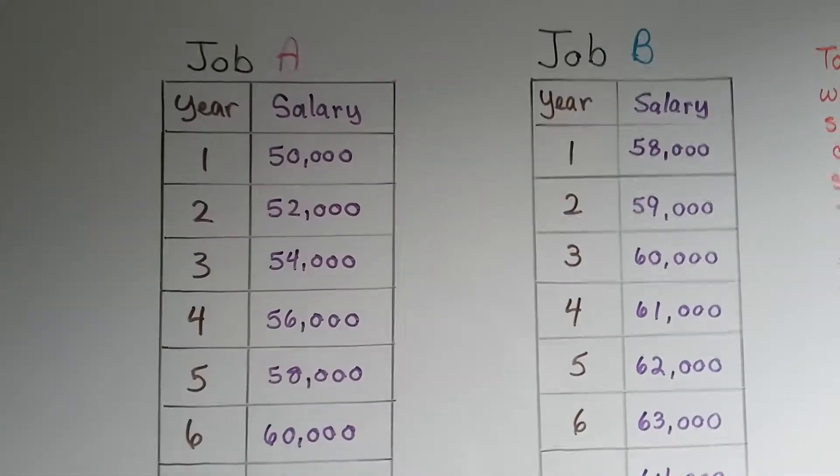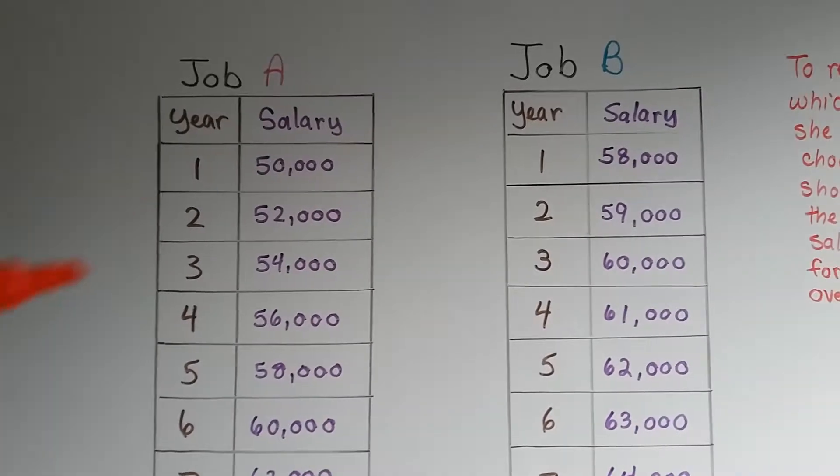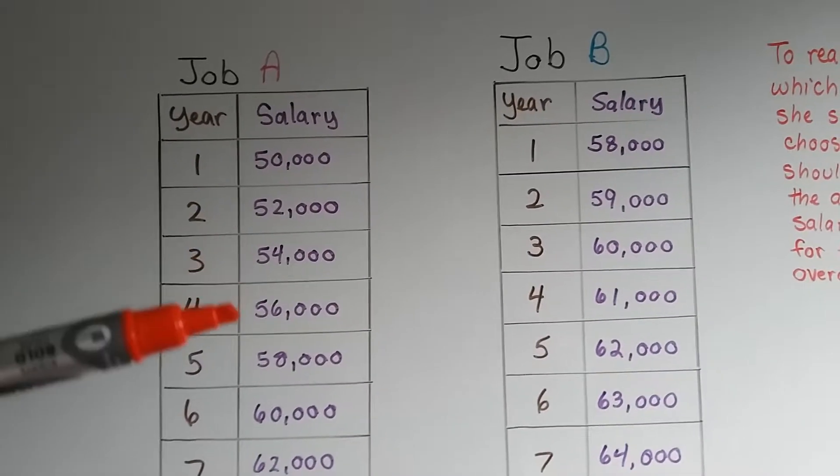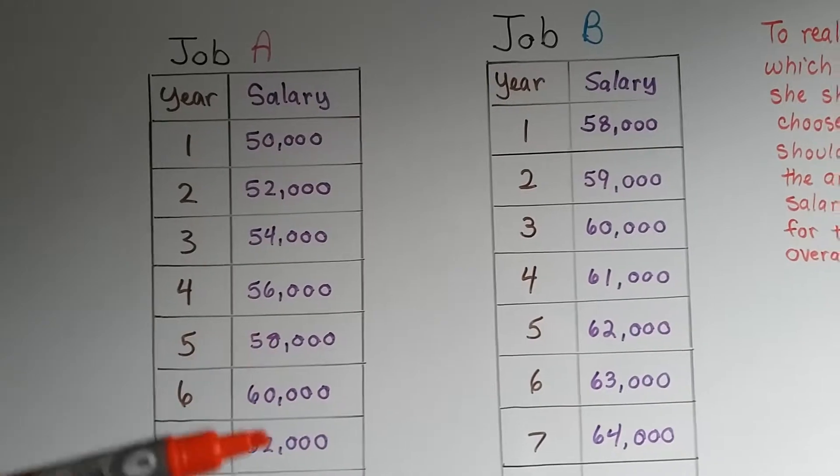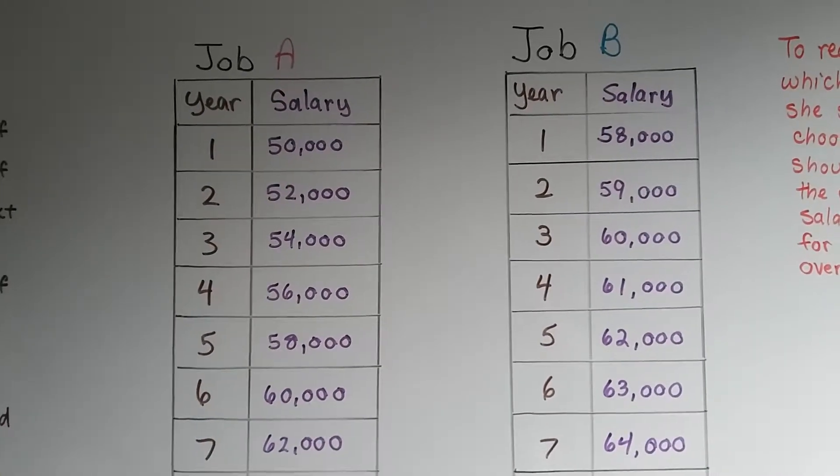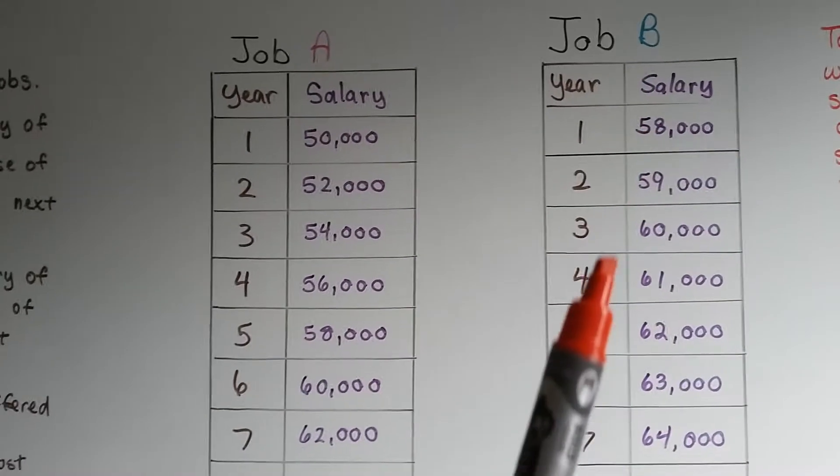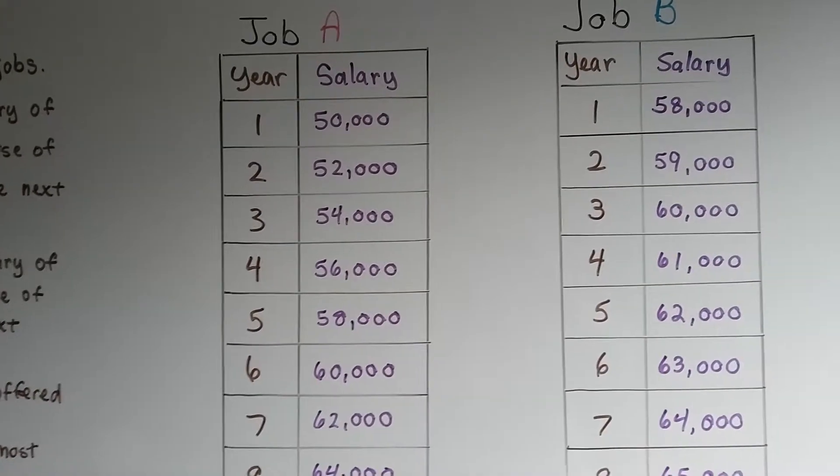So we made two tables. One for job A and one for job B. This one starts at $50,000 and goes up by $2,000 each year. See? See the pattern of going up by $2,000? This one started at $58,000 and goes up by $1,000 each year.